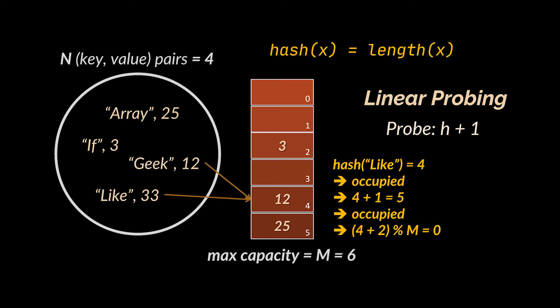In our previous example, the key 'like' which was mapped to the same slot as 'geek' will be mapped again using a plus one probe to index 5. But in our case index 5 is also occupied, so it will be remapped to the next available index which is zero because of the modulo operator we are using, and the value having 'like' as key will sit there.